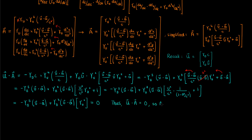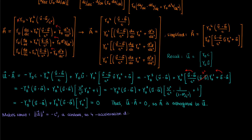So the velocity four vector is always orthogonal to the acceleration four vector. This makes sense because the velocity four vector has a constant magnitude squared of negative c squared. The four acceleration only changes the direction of the four velocity, acting perpendicular to it with no parallel component. This isn't the case in classical mechanics with the three-acceleration vector — the main situation where three-dimensional acceleration is perpendicular to velocity is uniform circular motion.